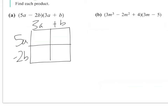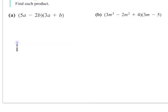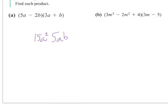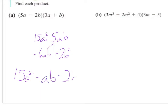For example A, I set up a 2×2 box with 5A minus 2B on one side and 3A plus B across the top. Finding the four products inside: 15A squared, 5AB, negative 6AB, and negative 2B squared. The AB terms are like terms and combine. Since all terms are second degree, I write the result as 15A squared minus AB minus 2B squared.